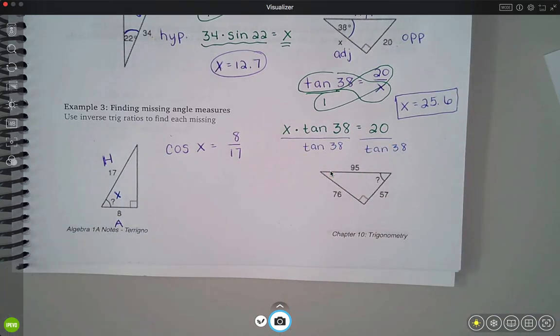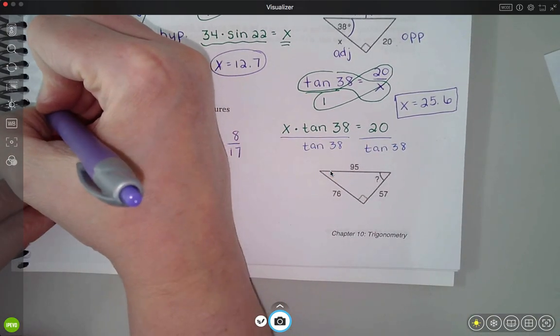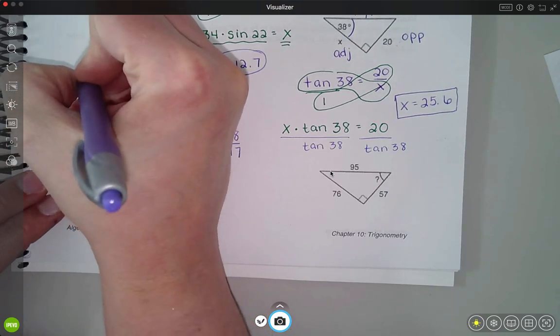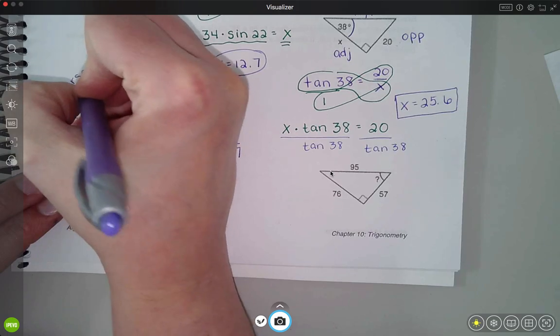So now what I want to do is ask my calculator what angle has this as a ratio, and the way that you do this is with the inverse trig functions.